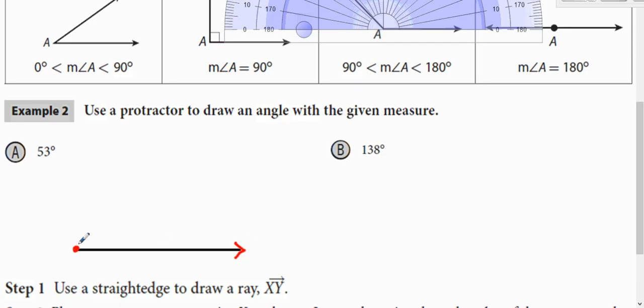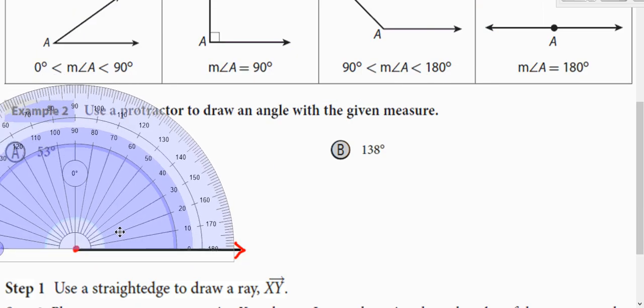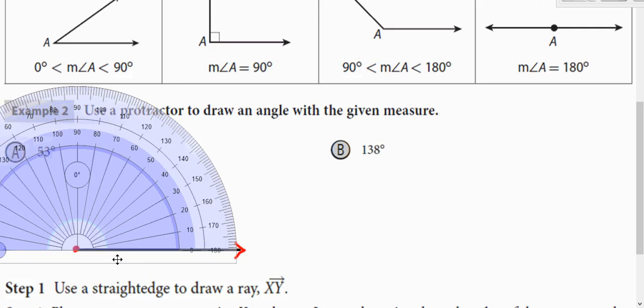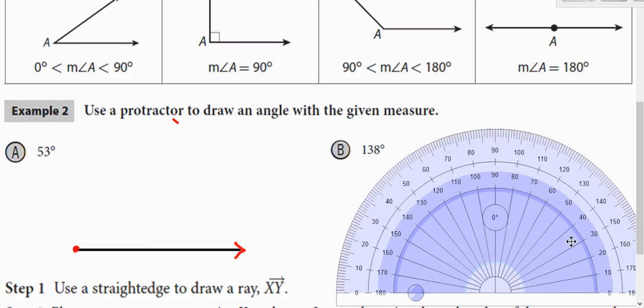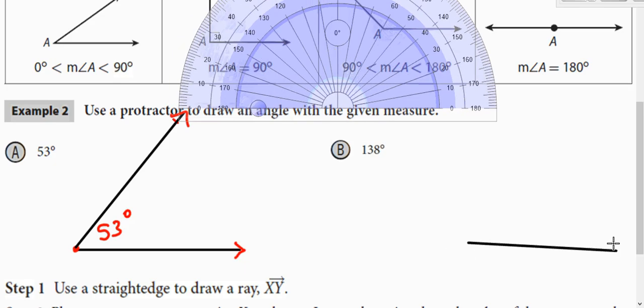So if we're going to use a protractor to draw an angle with a 53 degree measure, start with your ray. And you're going to use your protractor, you're going to line it up, crosshairs on the vertex. And we want 53 degrees. So here's 50, 53. Be right about there. Use your pencil to mark off where the 53 degrees is. Since there's an inside cutout on your protractor, you could use that inside cutout with your pencil. And you just draw the other side. And that is 53 degrees.